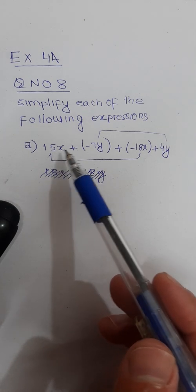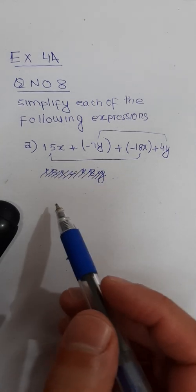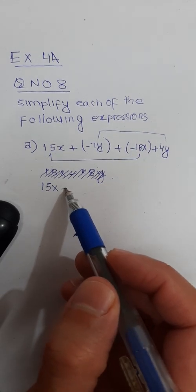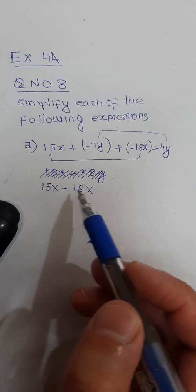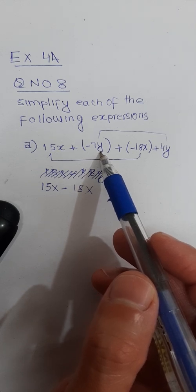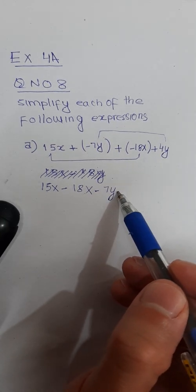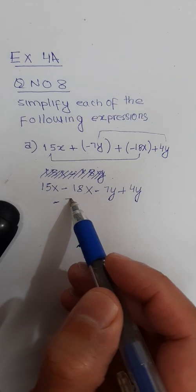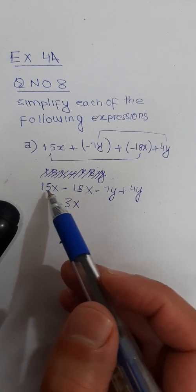Combine the like terms: 15x and minus 18x are like terms, so write them together. 15x and minus 18x are like terms because both have x — here the coefficient is 15, here it is minus 18. Also combine the terms having the variable y: minus 7y plus 4y. Now 15x minus 18x is minus 3x, because 18 is a larger number compared to 15.